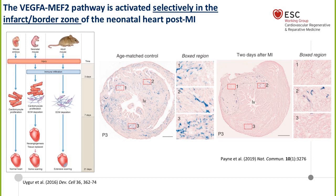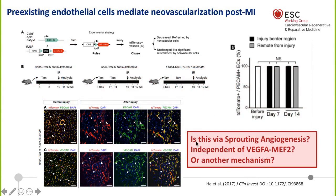We assume this may also be true in the human heart, which may explain why clinical trials showed minimal benefit — the heart simply doesn't want to respond to the growth factor given therapeutically. Going back to the lineage trace study proposing all new vessels derive by sprouting angiogenesis, we would have to assume this occurs by a non-VEGFA mediated pathway, which would be entirely unexpected given that that's the normal response downstream of hypoxia. Or might there be another mechanism involved?